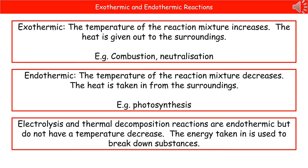Today's chemistry check is looking at exothermic and endothermic reactions and their reaction profiles. An exothermic reaction is where the temperature of the reaction mixture increases, so we're giving out heat to the surroundings — combustion and neutralisation are good examples. In endothermic reactions, the temperature of the reaction mixture decreases because heat is taken in from the surroundings. Good examples are photosynthesis, electrolysis, and thermal decomposition.